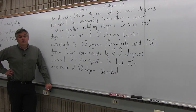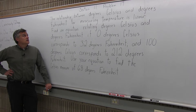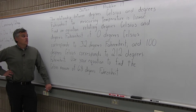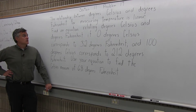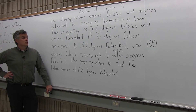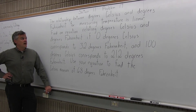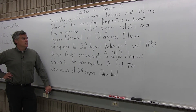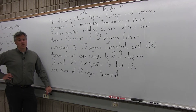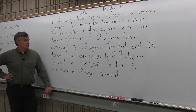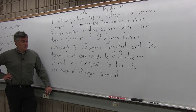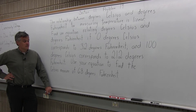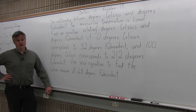This is question number 19 from Section 1.1. It says: the relationship between degrees Celsius and degrees Fahrenheit for measuring temperature is linear. Find an equation relating degrees Celsius and degrees Fahrenheit if zero degrees Celsius corresponds to 32 degrees Fahrenheit and 100 degrees Celsius corresponds to 212 degrees Fahrenheit. Use your equation to find the Celsius measure of 68 degrees Fahrenheit.